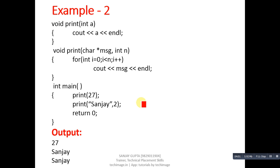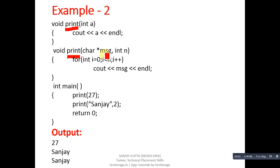This is another example also related to function overloading. In this example, two functions are named print but they receive different numbers of arguments. The first print receives one argument of integer type, and the second print function receives two arguments — the first is character type and the second is integer type. The first function displays the value of a directly, and the second function uses a loop to print a message n number of times.